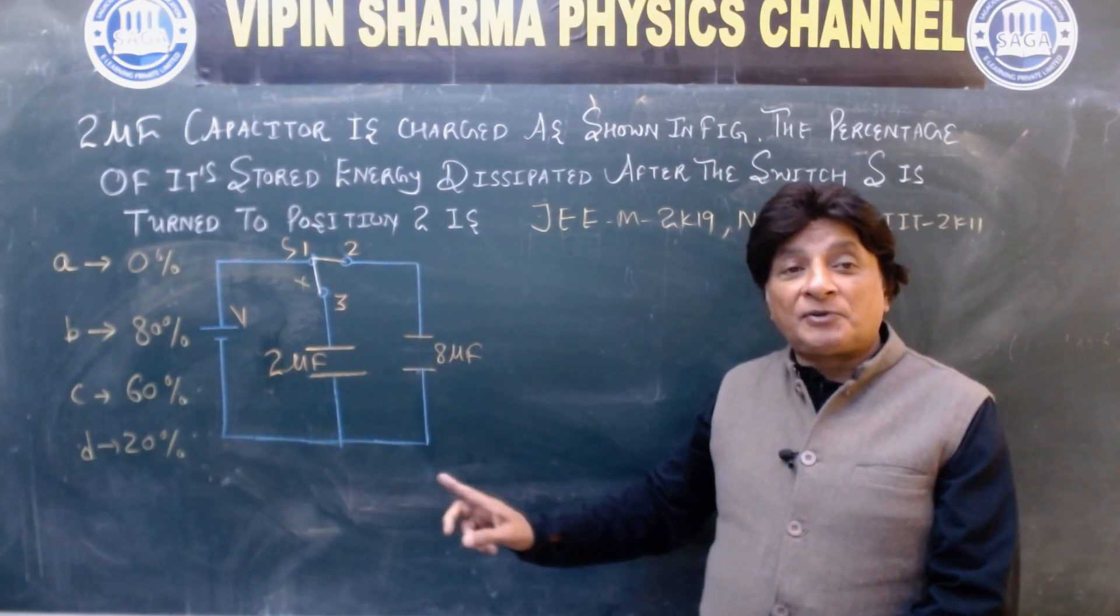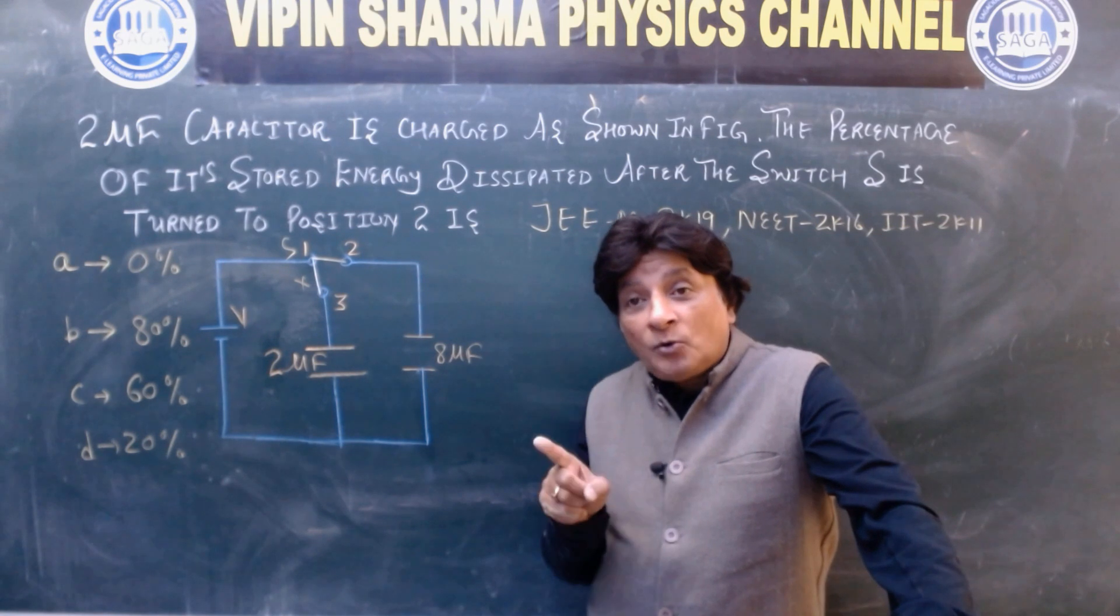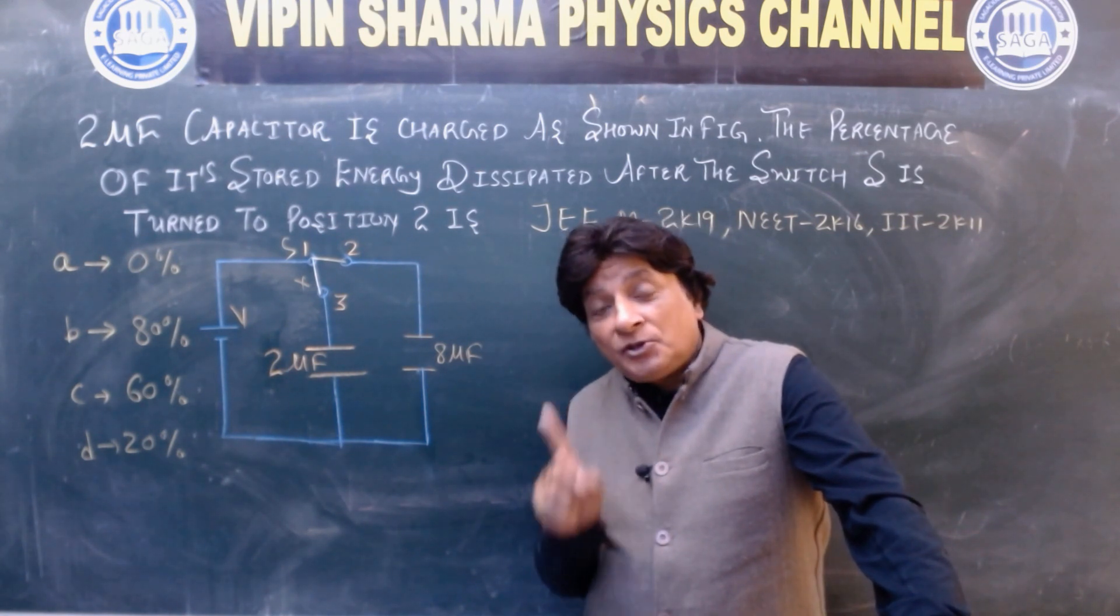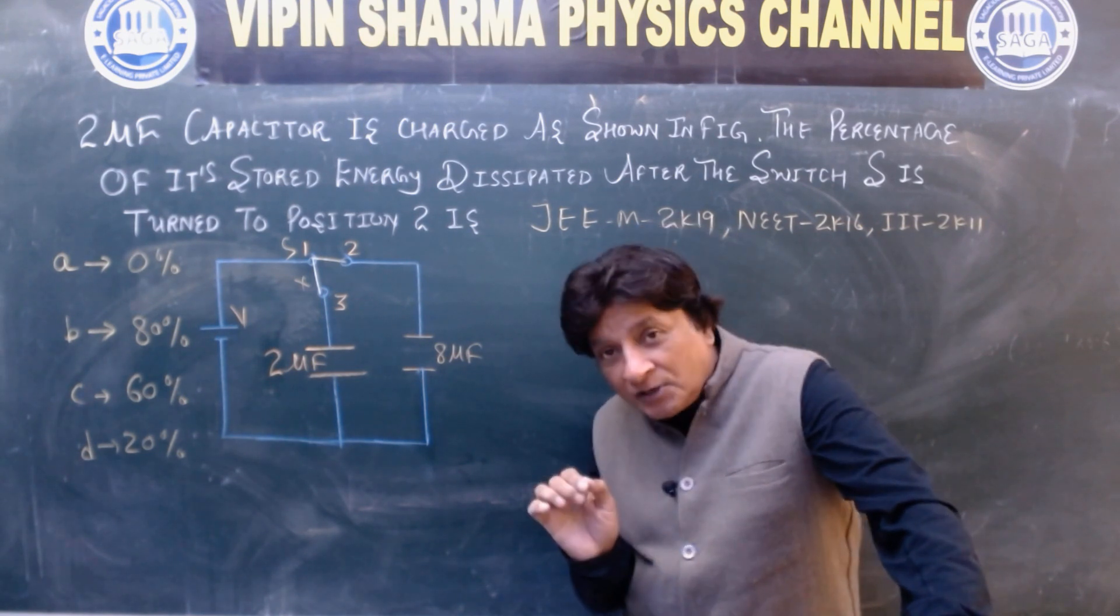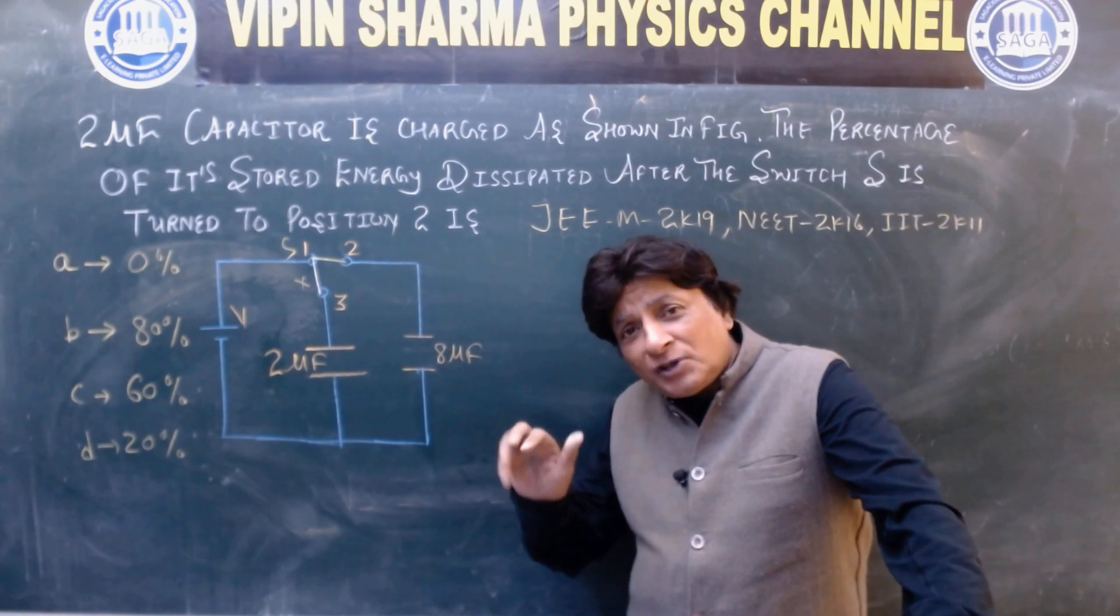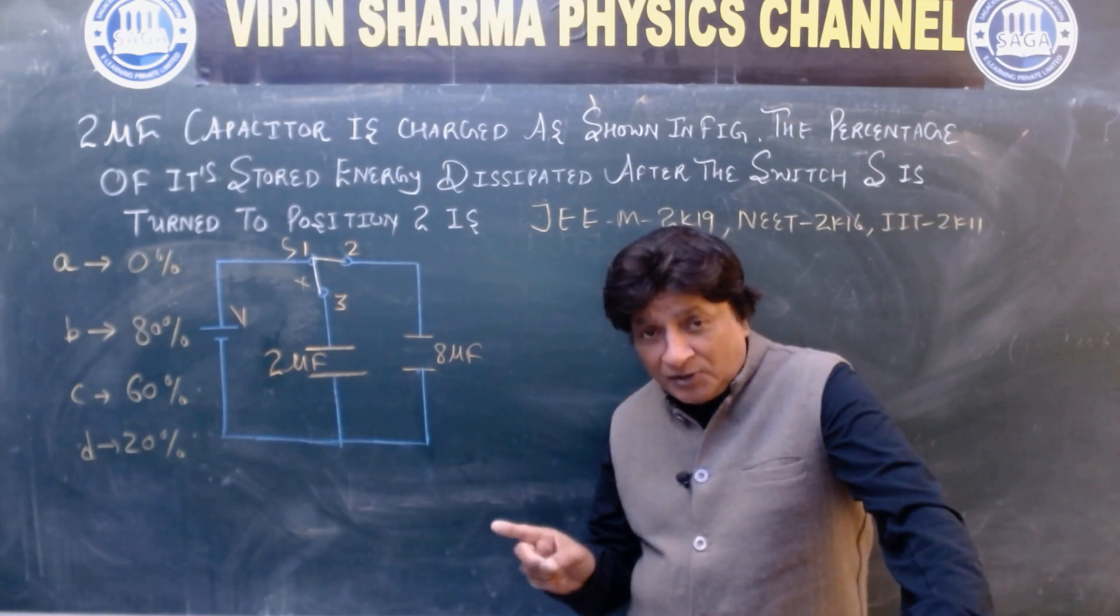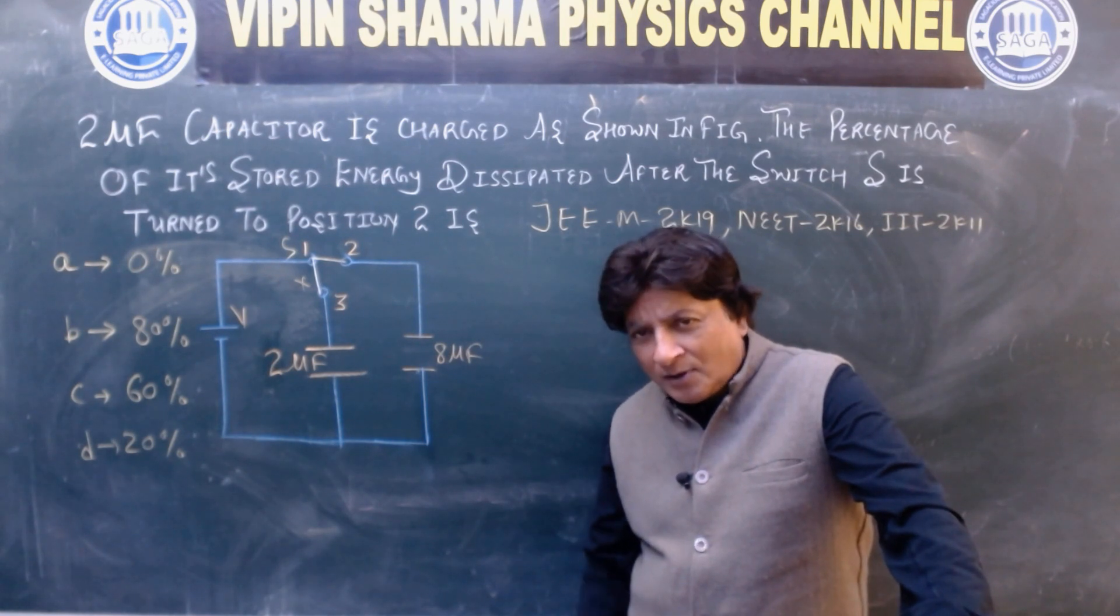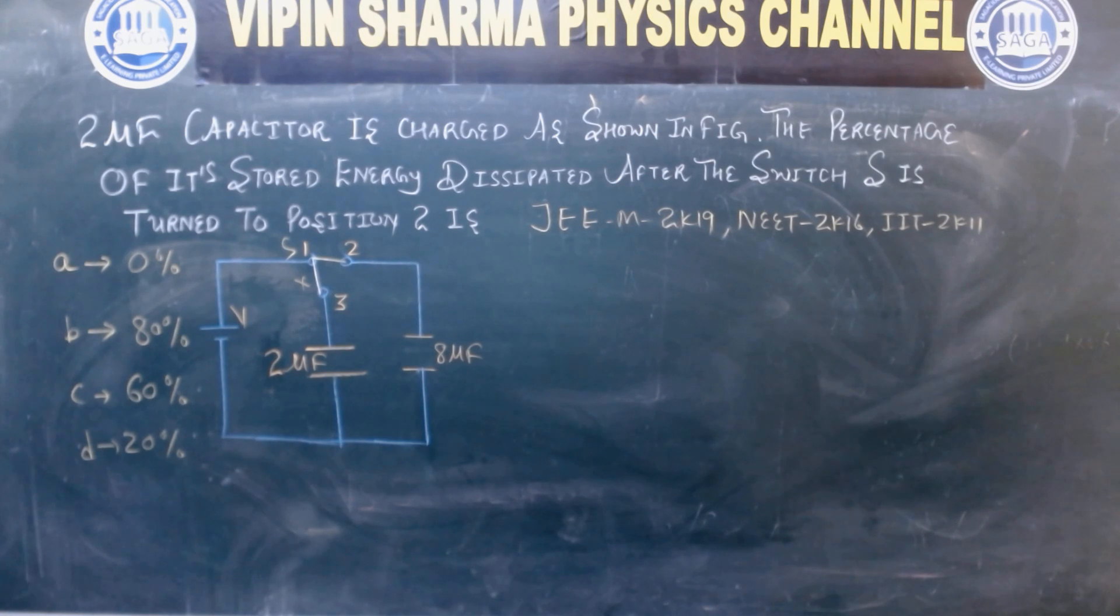Options: 0%, 80%, 60%, 20%. Once again, I repeat the statement. 2 microfarad capacitor is charged as shown in figure. The percentage of its energy dissipated after the switch S is turned to position 2. This is the question. Now what you are going to do is you are going to pause it and try.